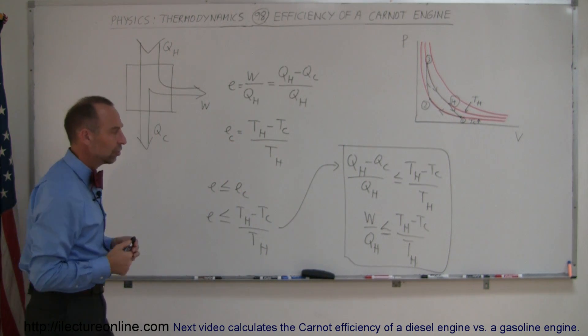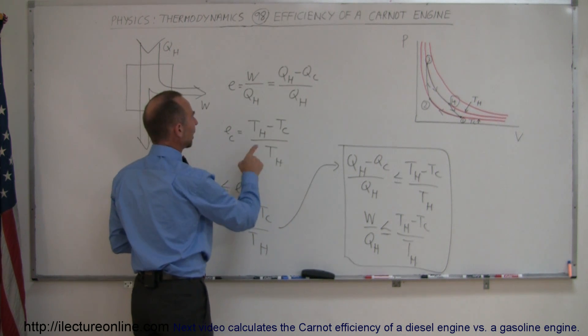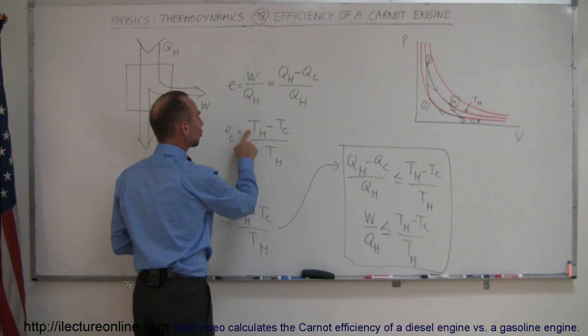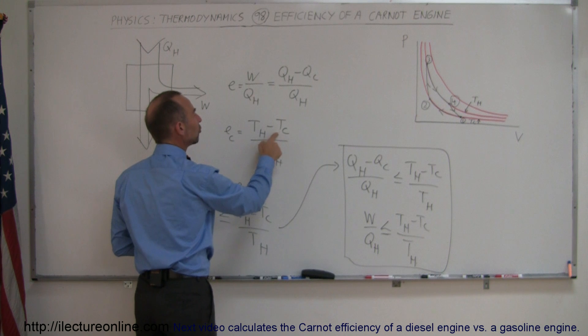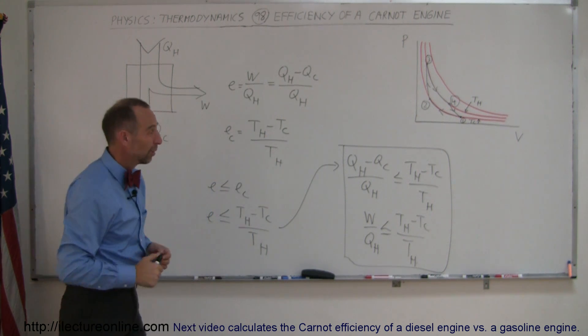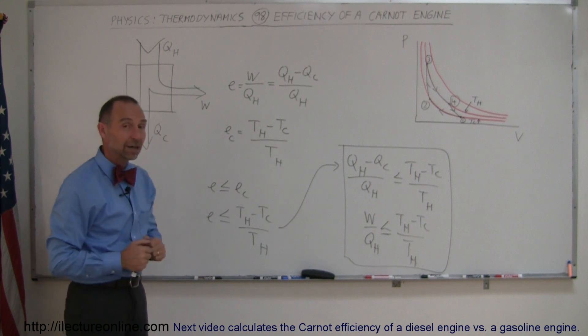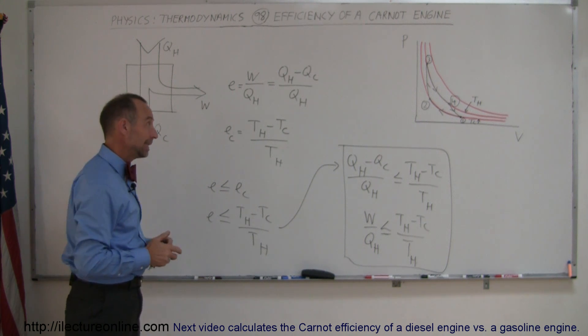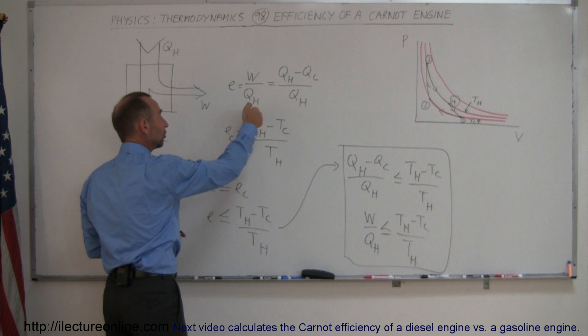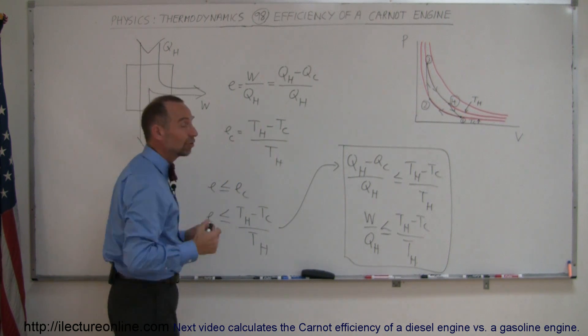You can imagine if you want this to be large, then all you have to do is make T_hot larger and T_cold smaller. In the limit, what do you think T_cold would have to be for the efficiency to be 100%? T_cold would have to be zero, so T_hot divided by T_hot is equal to one, which is 100%.